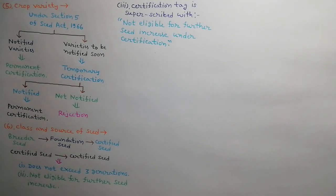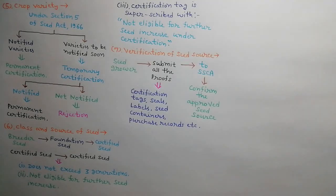Certified seed produced from certified seed shall not be eligible for further seed increase under certification, and the certification tag shall be superscribed with 'not eligible for further seed increase under certification.' A certified seed grower will have to submit all proofs to the state seed certification agency, such as certification tags, seals, labels, seed containers, and purchase records as demanded by the agency to confirm that the seed used for raising the crop has been obtained from an approved source.